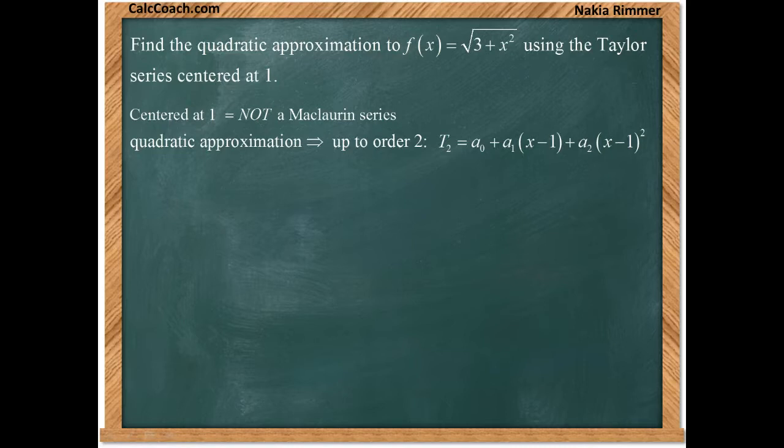Well how do we find the coefficients? It comes from taking the function, according to Taylor's polynomial, these coefficients are the function and its derivatives evaluated at a and then divided by n factorial.